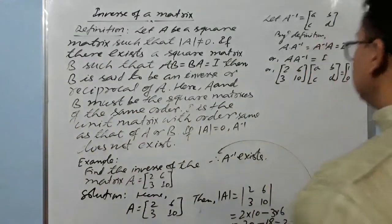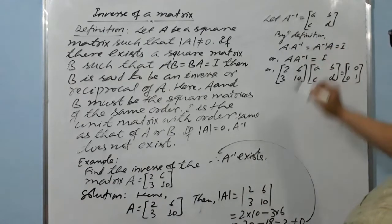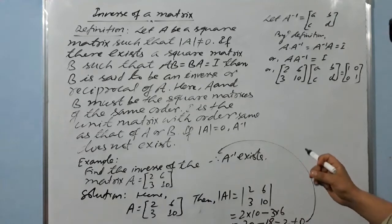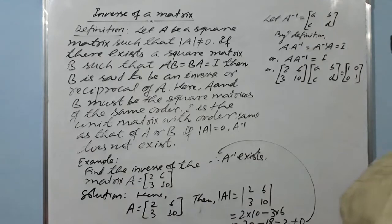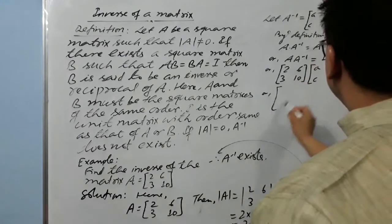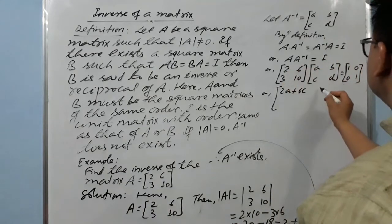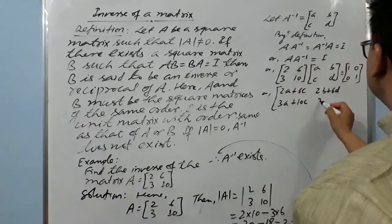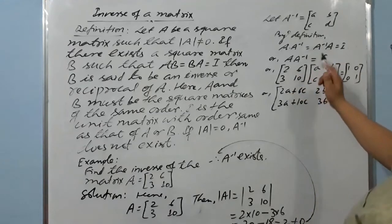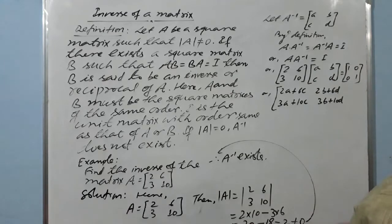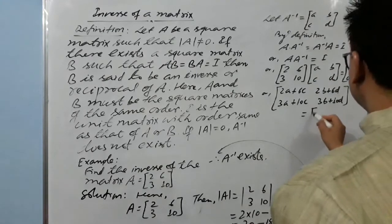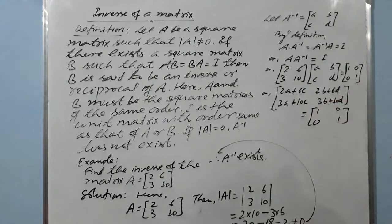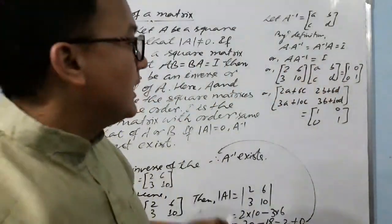By the definition of inverse, if A and A⁻¹ are inverses of each other, then A times A⁻¹ equals I. So multiplying A = [2, 6; 3, 10] by [a, b; c, d] equals the identity matrix [1, 0; 0, 1]. The product gives: [2a+6c, 2b+6d; 3a+10c, 3b+10d] = [1, 0; 0, 1]. Since these two matrices are equal, their corresponding elements must be equal.